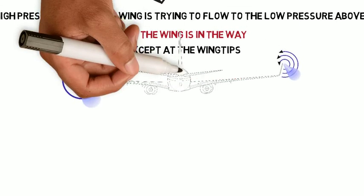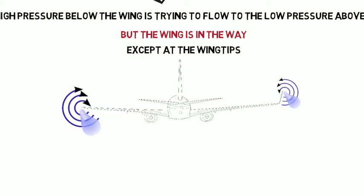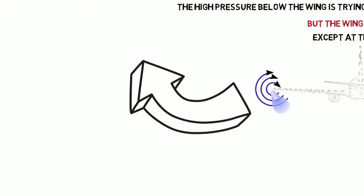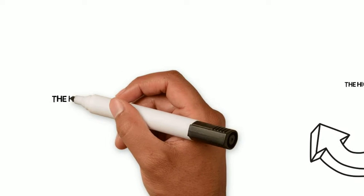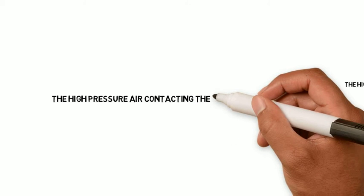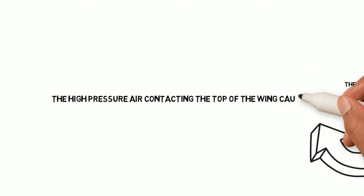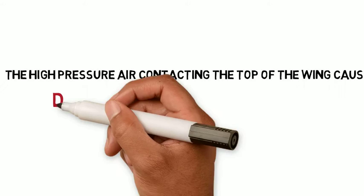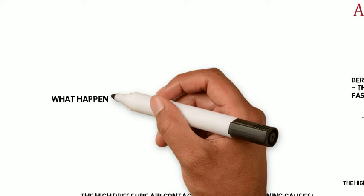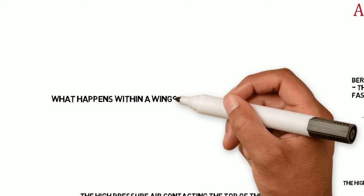As you can see in this picture, at the wing tips the high pressure air can actually flow out and around the wing tips up to the low pressure air, causing some drag by contacting the top side of the wing. The high pressure air contacting the top of the wing causes drag and a reduction in lift. This is what we have typically when we're flying around.